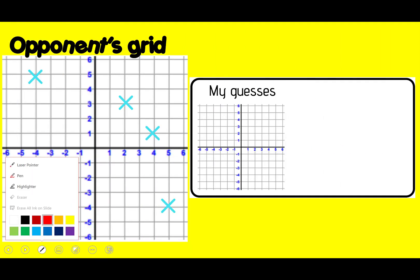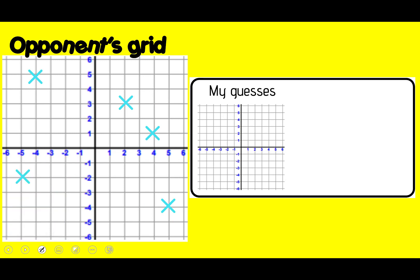So let's have a look at how we would play the battleships game with the four quadrant grid. Let's imagine that on the left-hand side is your opponent's grid and it was your go first. You would call out your first guess — for example, I'm going to say negative four, three. And I'm going to make a note of my guess on my grid: negative four, three. My opponent would go to their grid, go along to negative four and up to three, and there's nothing there, so they would say miss. So on your grid, you can cross it out or circle it, and on your mini grid, go along to negative four and up to three and just indicate that there was nothing there. That stops you from making the same guess again.